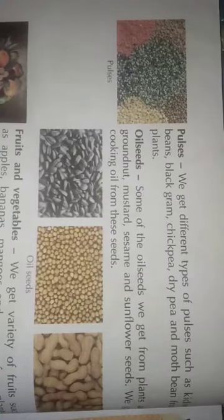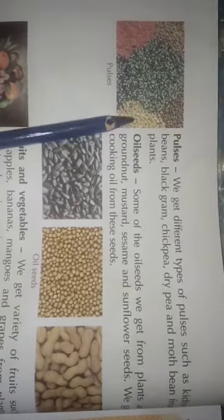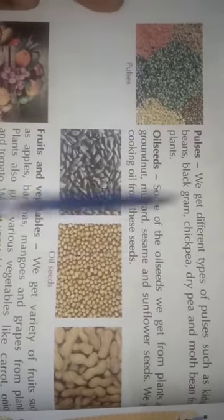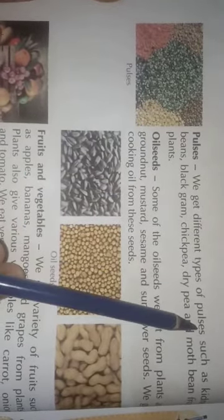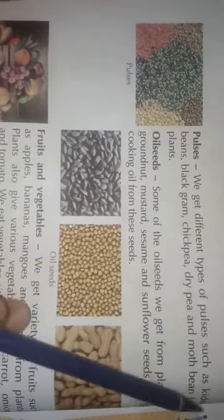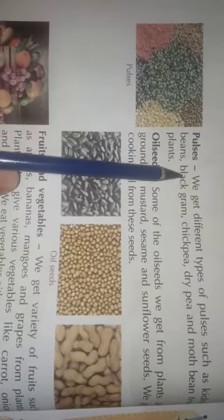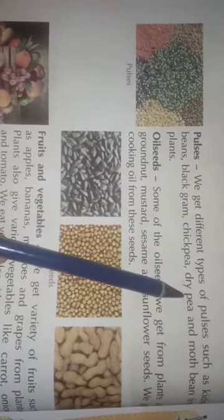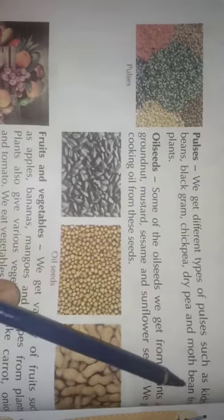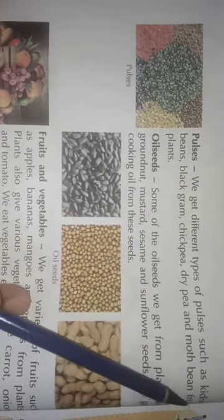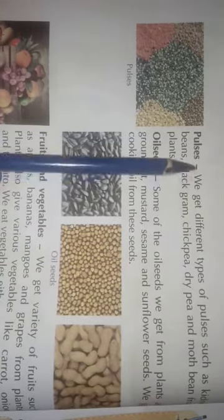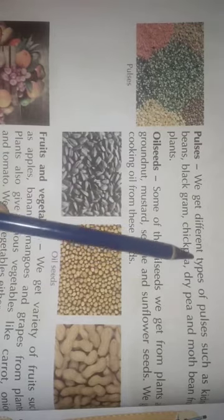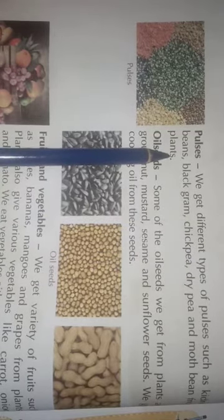On page number 34 we have pulses. Pulses means dals. We get different types of pulses such as kidney beans, black gram, chickpea, dry pea and moth bean from plants.